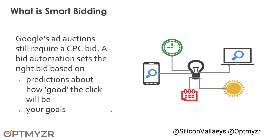Now let's talk about automated bidding a little bit more, because this is the most accessible and probably what most people are going to be using. We recently had a good number of our customers come to us actually surprised that they were using automated bidding from Google and had no clue they were even doing this. What sometimes happens is if you set up a new campaign and Google asks what goals you have — are you trying to generate conversions or sales? — based on those answers, they automatically pick an automated bidding strategy. So people end up on some sort of automated bidding system without even knowing it.